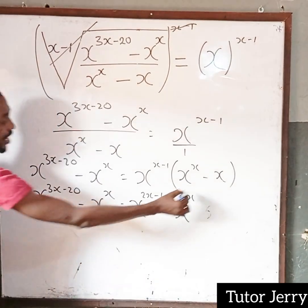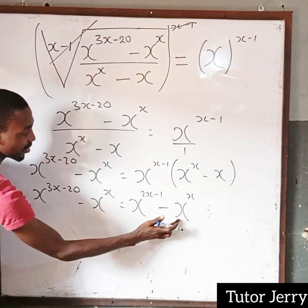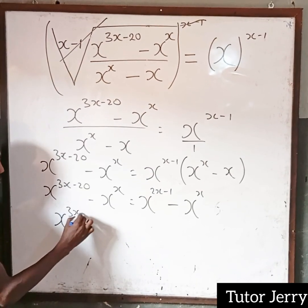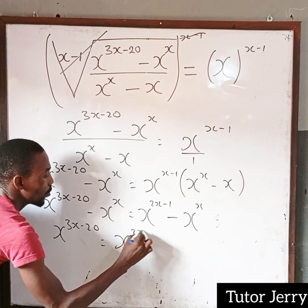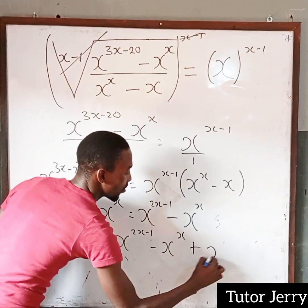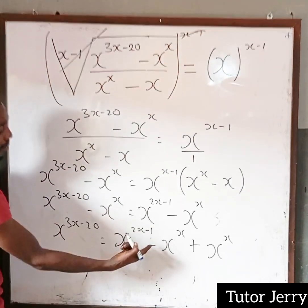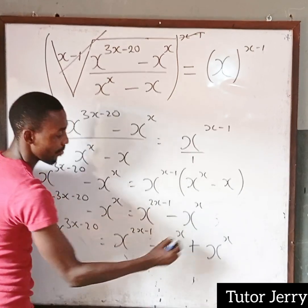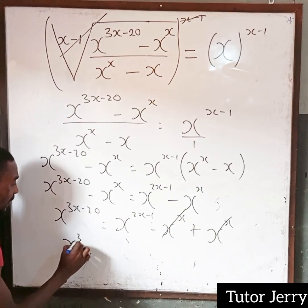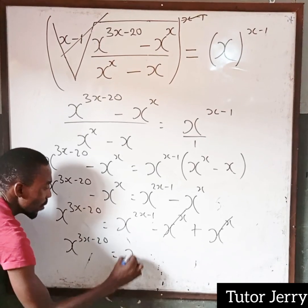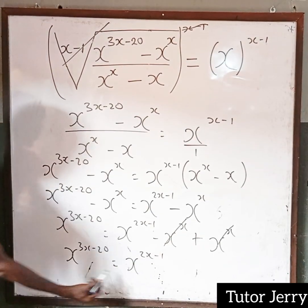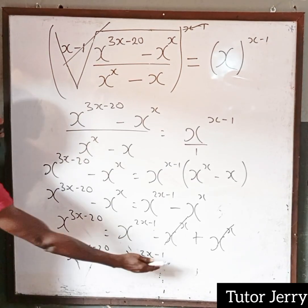You will agree with me that this x to the power of x will cancel out with the other x to the power of x. Because if we collect like terms, x to the power of x brought to the other side — minus x to the power of x plus x to the power of x is zero. So they cancel out. We are left with x to the power of 3x minus 20, which is equal to x to the power of 2x minus 1.